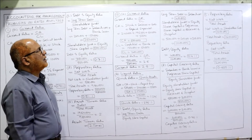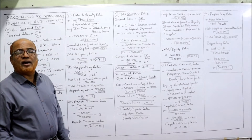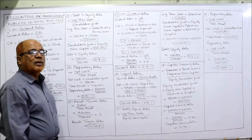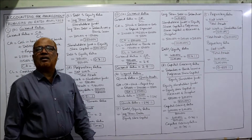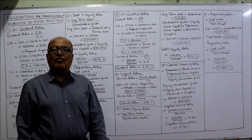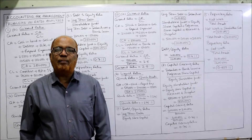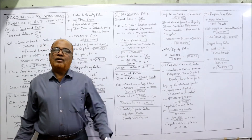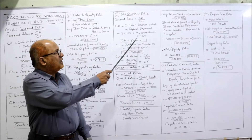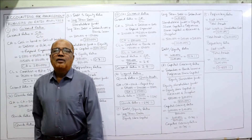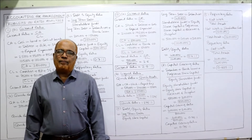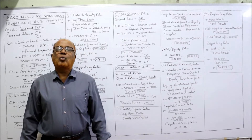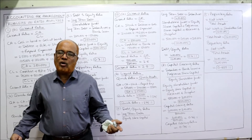Current ratio: current assets divided by current liabilities. Current assets consist of four items — stock, debtors, cash, prepaid — add up all values to get 5 lakh rupees. Current liabilities consist of creditors and bank overdraft totalling 2 lakh. So current ratio is 5 lakh divided by 2 lakh equals 2.5 is to 1.